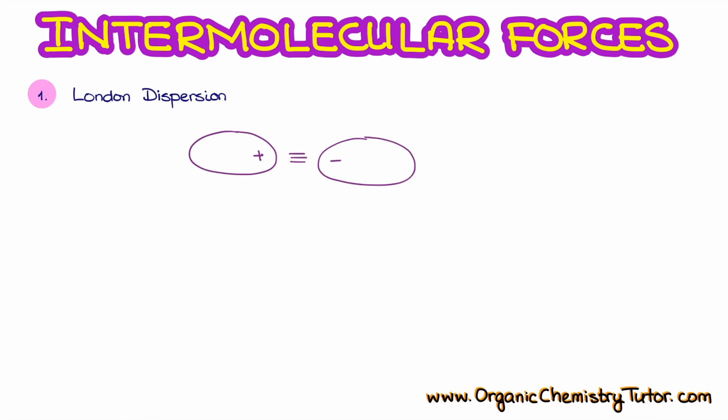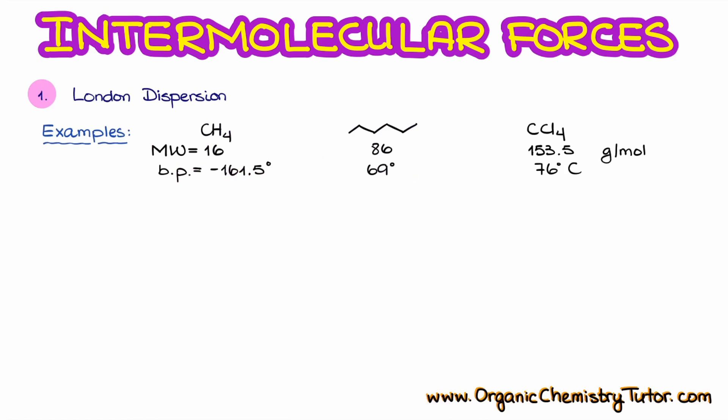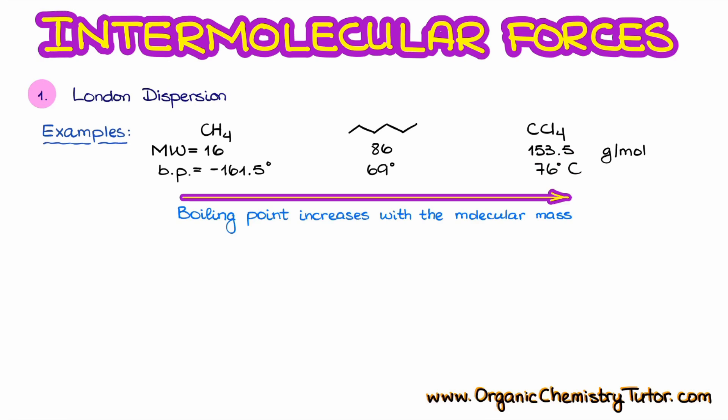Dispersion forces are weak, but they do scale with molecular size and atomic weight, so bigger molecules can have very large dispersion interactions merely due to their size or weight. Here is an example with three different molecules: a very light molecule with a molecular mass of only 16 g/mol, then hexane at 86 g/mol, and finally carbon tetrachloride at over 150 g/mol. These molecules experience no other intermolecular forces but London dispersion. Looking at their boiling points, we can see a clear relationship — the very light molecule has a very low boiling point while the very heavy molecule has a very high boiling point.